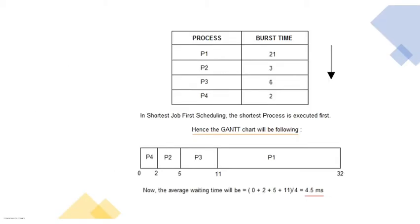Let us discuss SJF with the help of a diagram. The execution time for each process is: P1 has 21ms, P2 has 3ms, P3 has 6ms, and P4 has 2ms. Clearly P4 has the shortest execution time, then P2, then P3, then P1. So the scheduling is done accordingly. The chart showing this scheduling arrangement is called a Gantt chart, which is the diagram that shows the scheduling. So in the Gantt chart for SJF, P4 comes first, then P2, then P3, then P1.